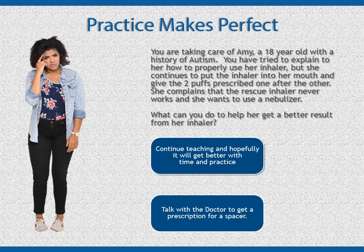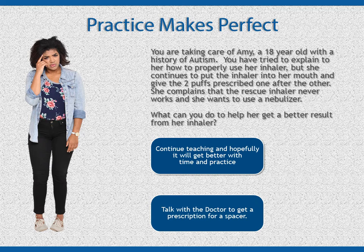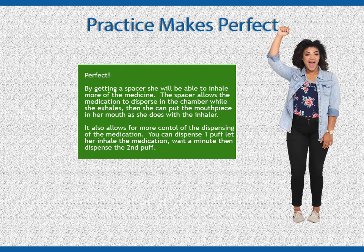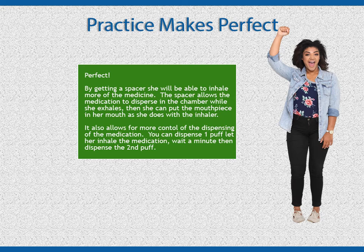You are taking care of Amy, an 18-year-old with a history of autism. You have tried to explain to her how to properly use her inhaler, but she continues to put the inhaler into her mouth and gives the two puffs prescribed one after the other. She complains that the rescue inhaler never works and wants to use a nebulizer. By getting a spacer, she will be able to inhale more of the medication. The spacer allows the medication to disperse in the chamber while she exhales, and she can put the mouthpiece in her mouth as she does with the inhaler. It also allows for more control: you can dispense one puff, let her inhale the medication, wait a minute, then dispense the second puff.